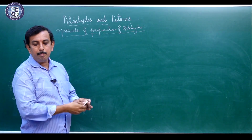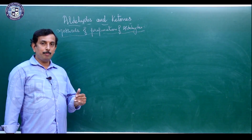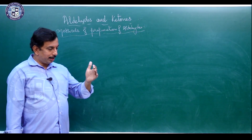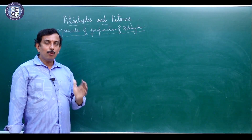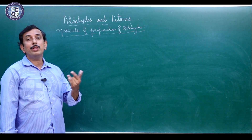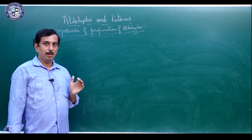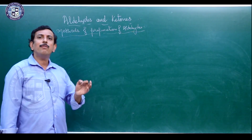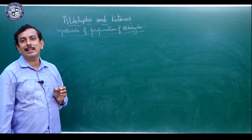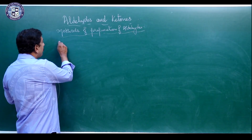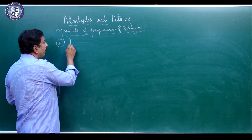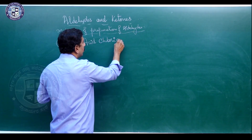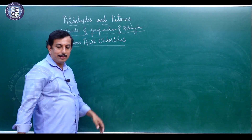Now we discuss specifically the preparation of aldehydes. There are stepwise methods: preparation of aldehydes and ketones together, then methods specific to aldehydes, then methods specific to ketones. The first specific method for preparation of aldehydes is from acid chlorides, also called acyl chlorides.